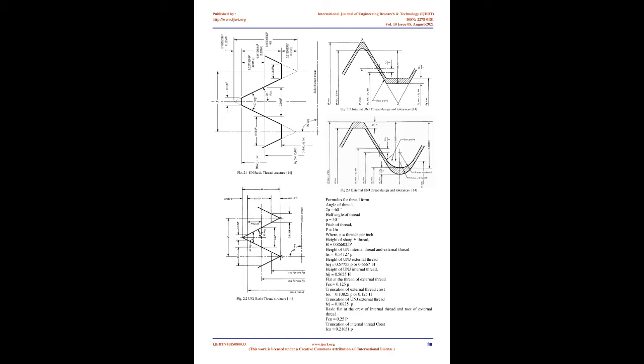Hydrogen Enhanced Localized Plasticity (HELP): This mechanism states that the speed of dislocation enhances near the crack tip due to the accumulation of hydrogen. Dislocation behaves as a carrier of plastic deformation in the metal lattice. Local dislocation movement is possible at relatively low tensile stress due to the presence of hydrogen.